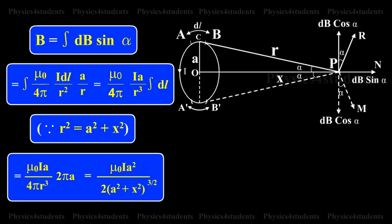Since R square is equal to A square plus X square, this is equal to mu naught IA by 4 pi R cube into 2 pi A, which is equal to mu naught IA square by 2 into A square plus X square the whole raised to 3 by 2.